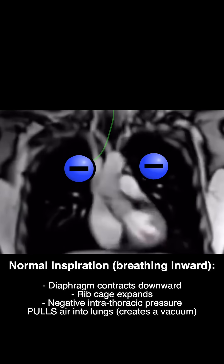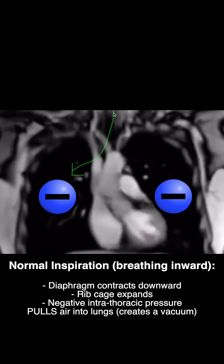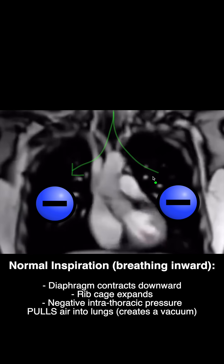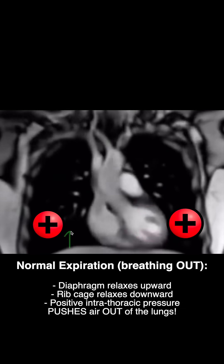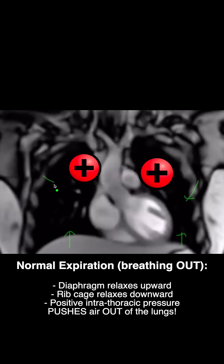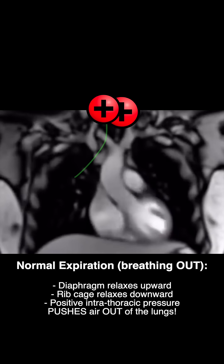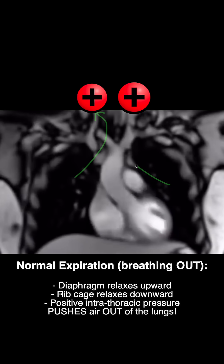This causes a negative intrathoracic pressure during inspiration, which allows air to enter. Then when we expire and breathe outward, the diaphragm relaxes, causing positive intrathoracic pressure, allowing air to be pushed out of the chest cavity.